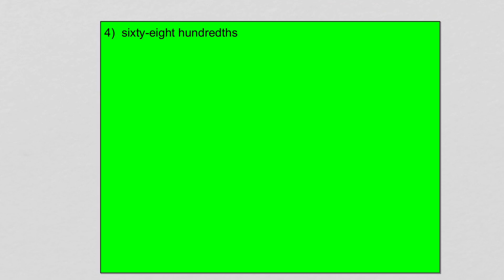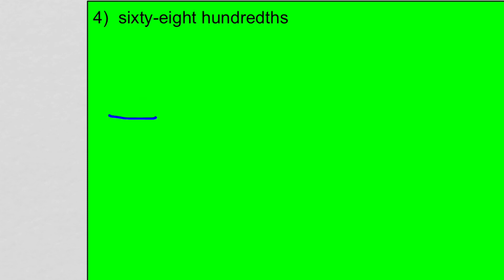Let's look at one more: sixty-eight hundredths. I'll put a space for my ones, I'll put a decimal, a space for my tenths, and a space for my hundredths. Sixty-eight hundredths — that must mean I have a six in the tenths and an eight in the hundredths. It doesn't say I have any wholes, so I have zero wholes. And there's my sixty-eight hundredths.